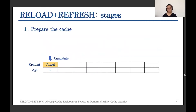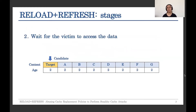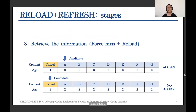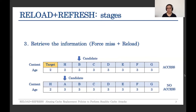RELOAD+REFRESH has different stages like any other cache attack. First, we have to prepare the cache: we place the target on the first position of the set and then fill the set with our own data. Then we wait for the victim to access the data. If the victim accesses the data, the h of the target decreases and the eviction candidate changes. If not, everything remains the same. Then we have to retrieve the information: we first force a miss, which means the h of all the elements is increased, and then we access one memory location that also maps to this set, so some data is evicted and the eviction candidate changes again.